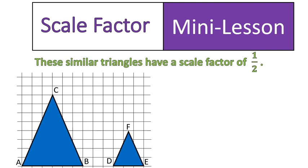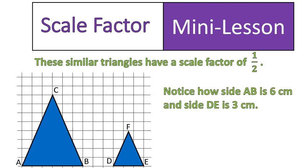So you notice how if I use the grid that's behind it as a measurement, you can notice that this triangle side AB is 6 centimeters and DE is 3 centimeters. You can see that the measurement of the sides on DEF are half of what they are on ABC. So that's a way that you could figure out the scale factor between them.